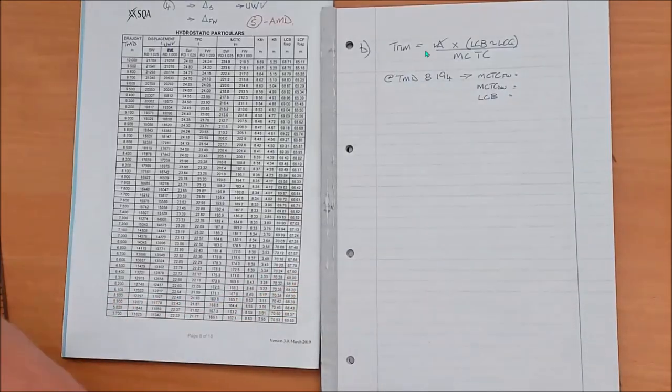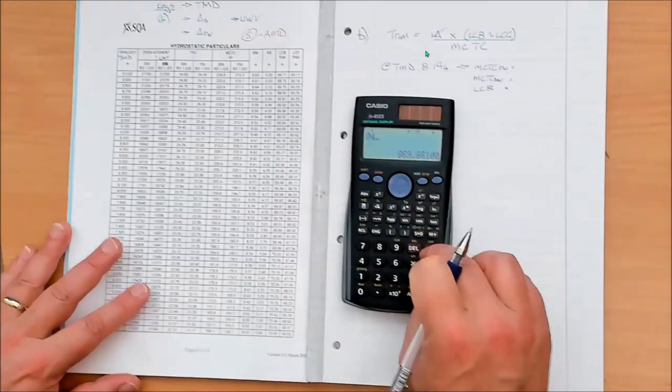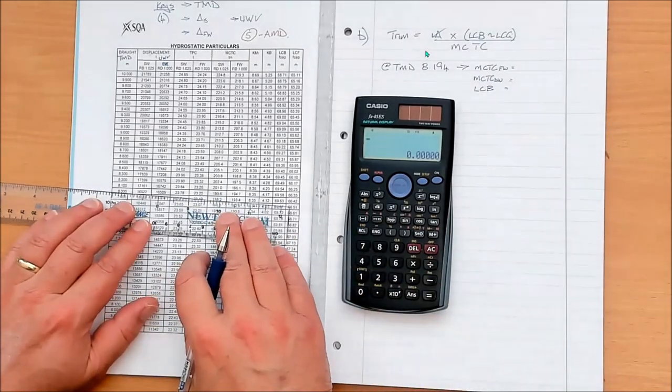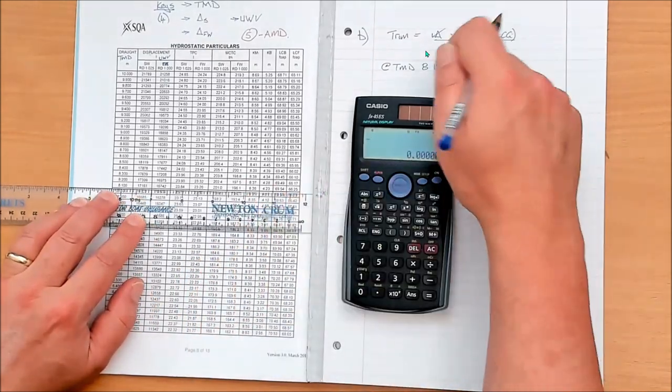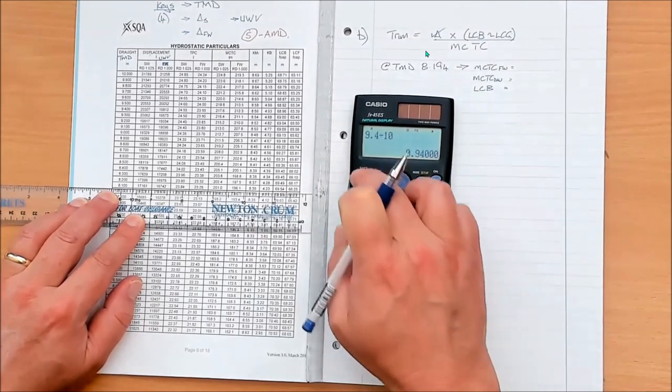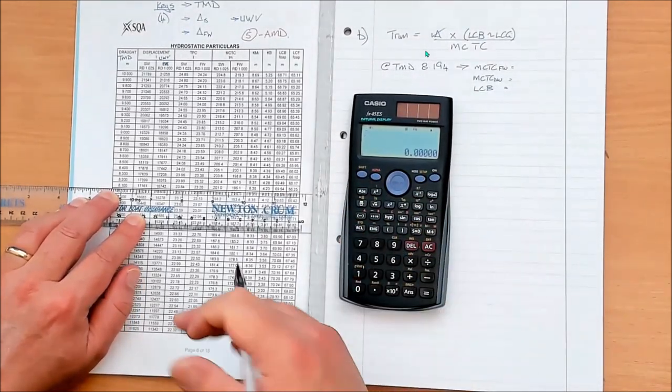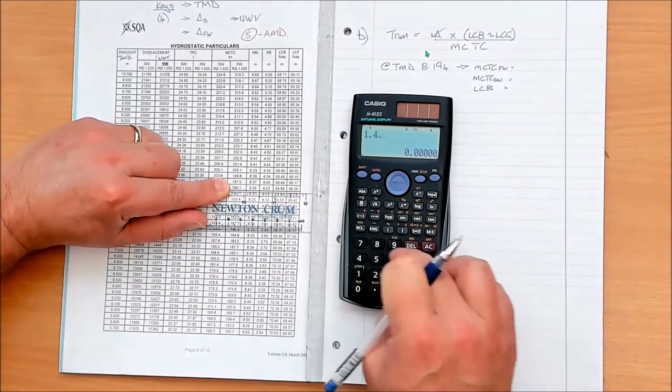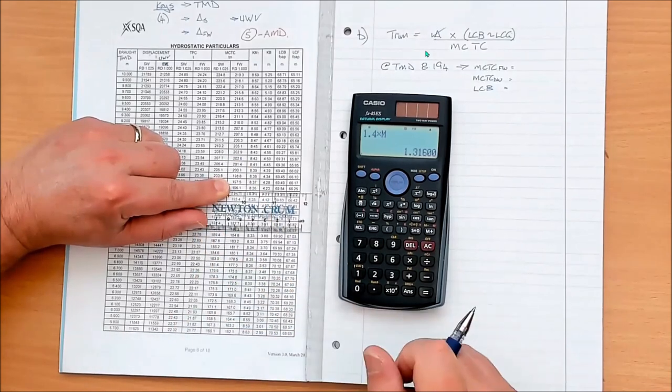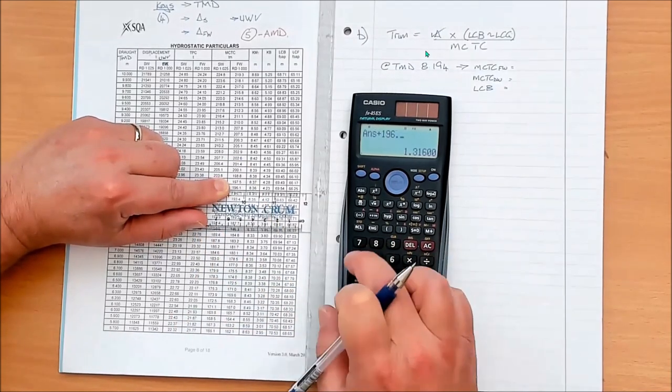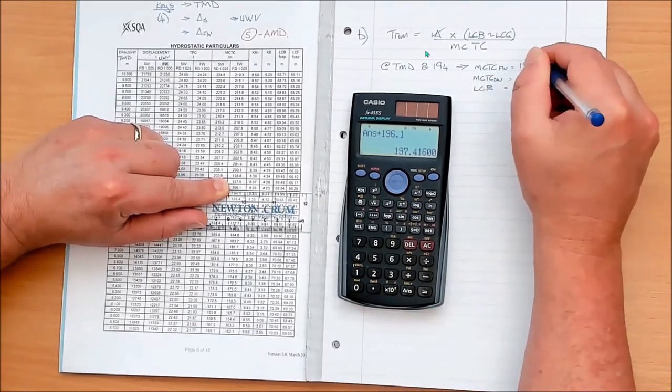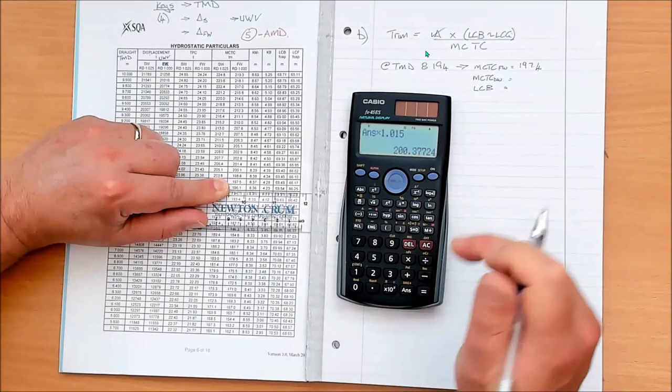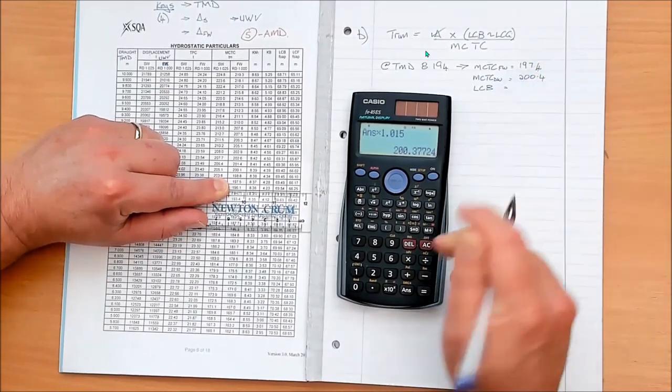There's my true mean draft. Right, can you see both pages? Absolutely. So at TMD 8.194. What do I need? Well, I've got the displacement, done. LCB. So I'm going to need LCB. In order of what we get, sometimes what I do is I use the headings, and I just like to get them in order. So next, first thing I'm going to need is MCTC. But I'm in dock water, so I need to remind myself, get fresh water. From fresh water, change it to MCTC dock water. It's not in the table, I'll correct it from there. Right, then I'm going to need LCB. And that's it, so there's my shopping list. That's what I need for the formula. Let's go fetch.